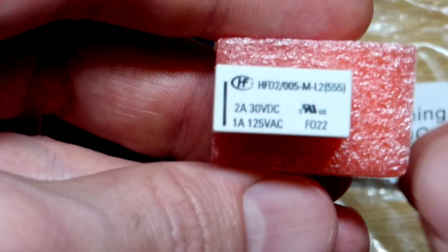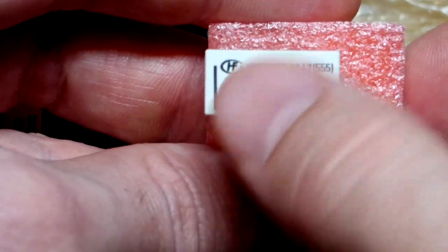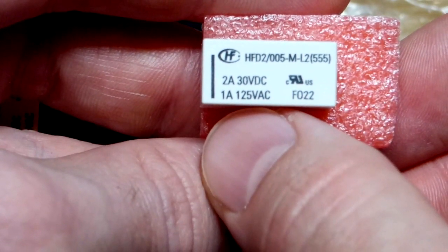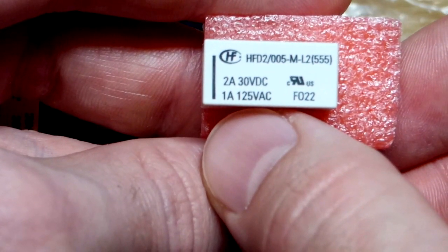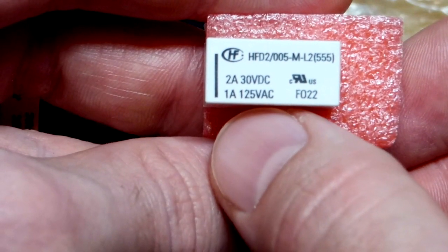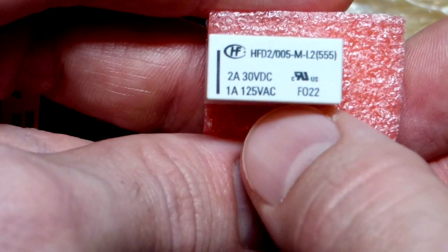In this video we're going to look at this coil latching relay right there. So there is the part number and there's the voltage and current that it can switch. So 2 amps at 30 volts DC or less and 1 amp at 125 volts AC or less.